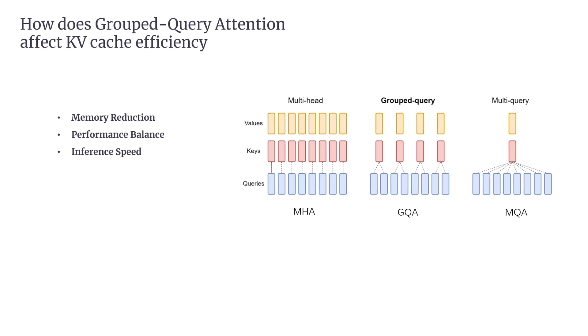The third, Inference Speed. A smaller KV cache means less memory bandwidth required during autoregressive decoding. This leads to faster inference because the model needs to access fewer key value pairs from the cache. This results in faster token generation, especially for longer sequences. Since GQA reduces the KV cache size, it allows the model to process tokens faster, improving overall performance.